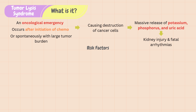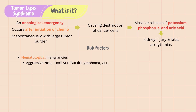There are several risk factors associated with TLS. TLS is more common in hematological malignancies such as aggressive non-Hodgkin's lymphoma, T-cell acute lymphoblastic leukemia or T-cell ALL, Burkitt lymphoma, and chronic lymphocytic leukemia or CLL.